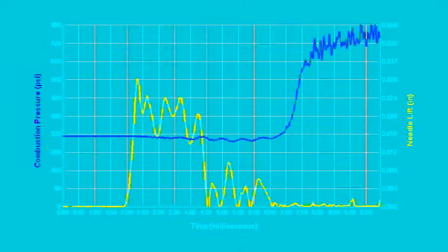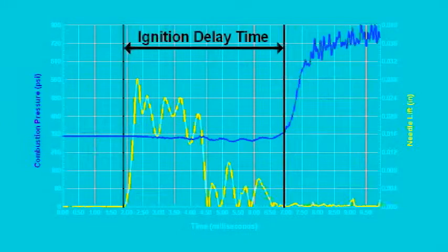The injection trace shows how the ignition delay is calculated. It is a graph of two distinct measurements. The yellow line shows the movement of the injector needle and the blue line shows the change in pressure inside the combustion chamber. Ignition delay is determined from the difference in time between the injection event and the combustion event.